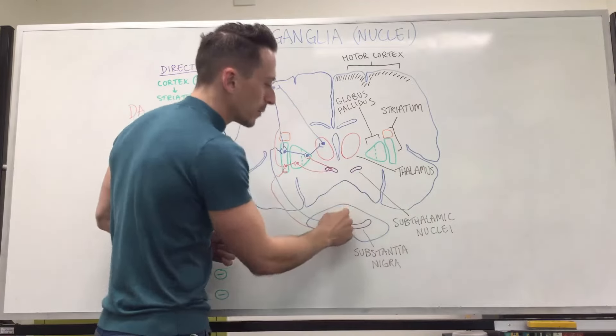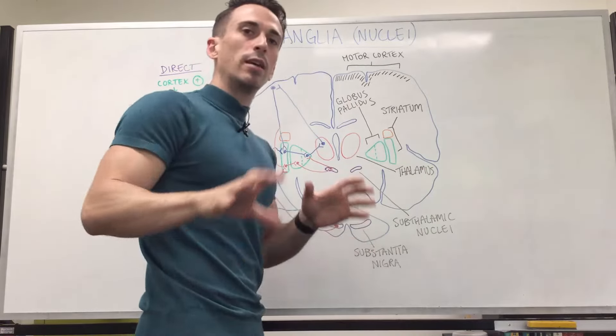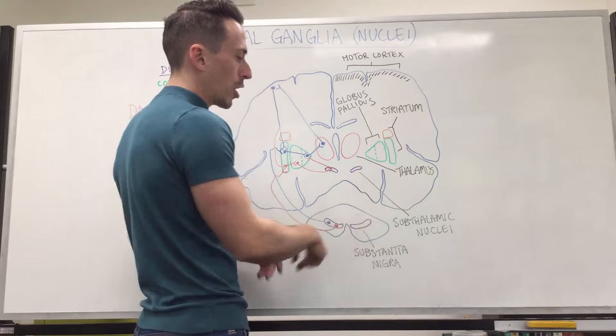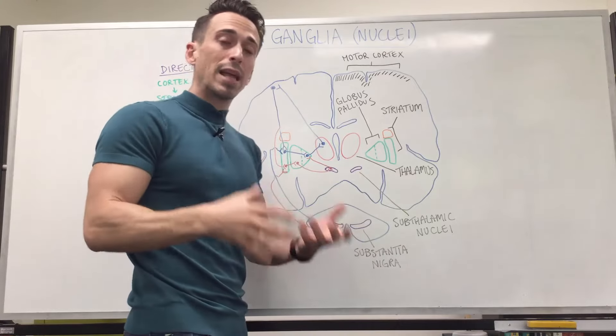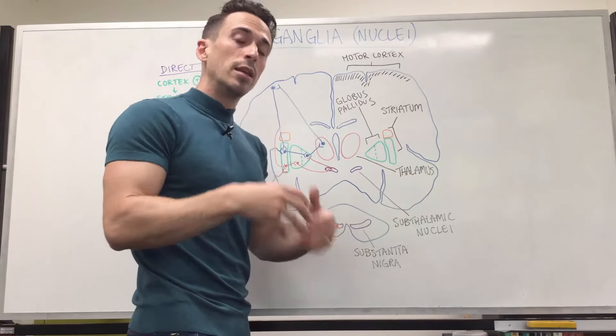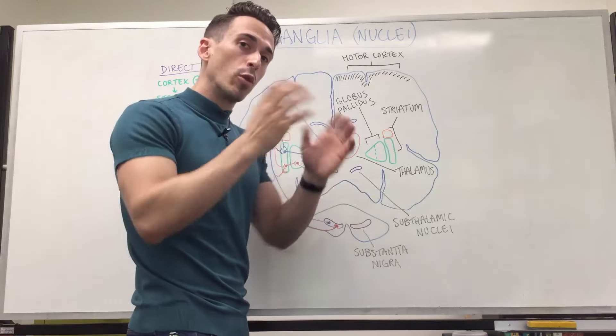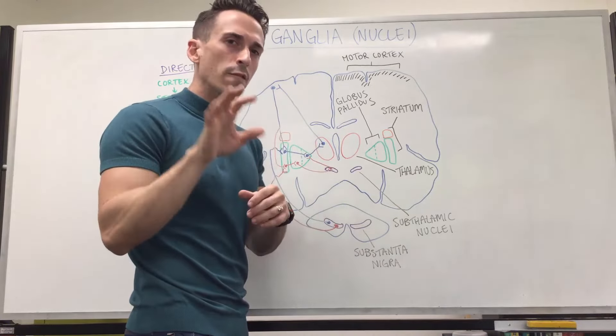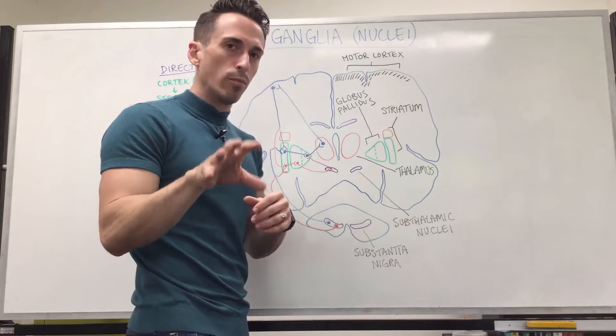If we go down to the medulla you'll see an important component called the substantia nigra, which means black substance. These are neurons that produce dopamine — very important in motor movement.